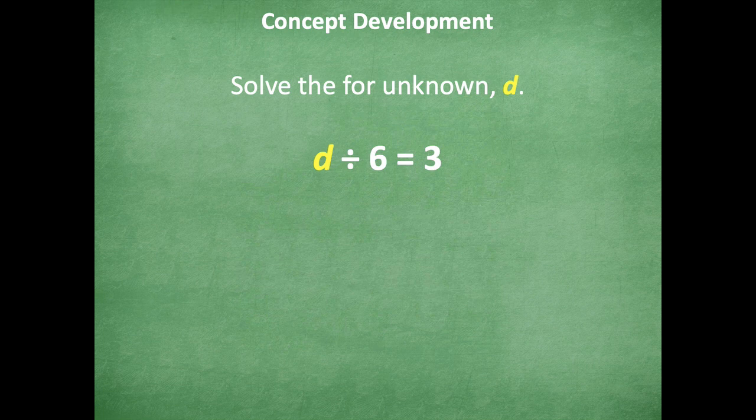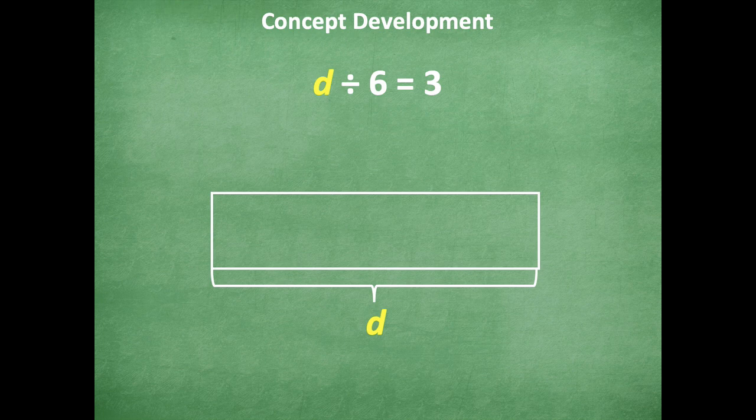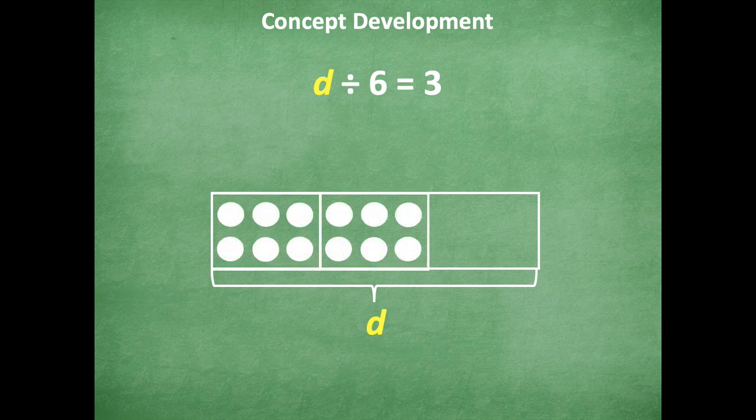All right, make sure to pause if you need more time. Otherwise, here we go. All right, so I chose to draw the tape diagram again. I know that the total is unknown right now. That's d. But I do know that there's six in each group and there's three groups.